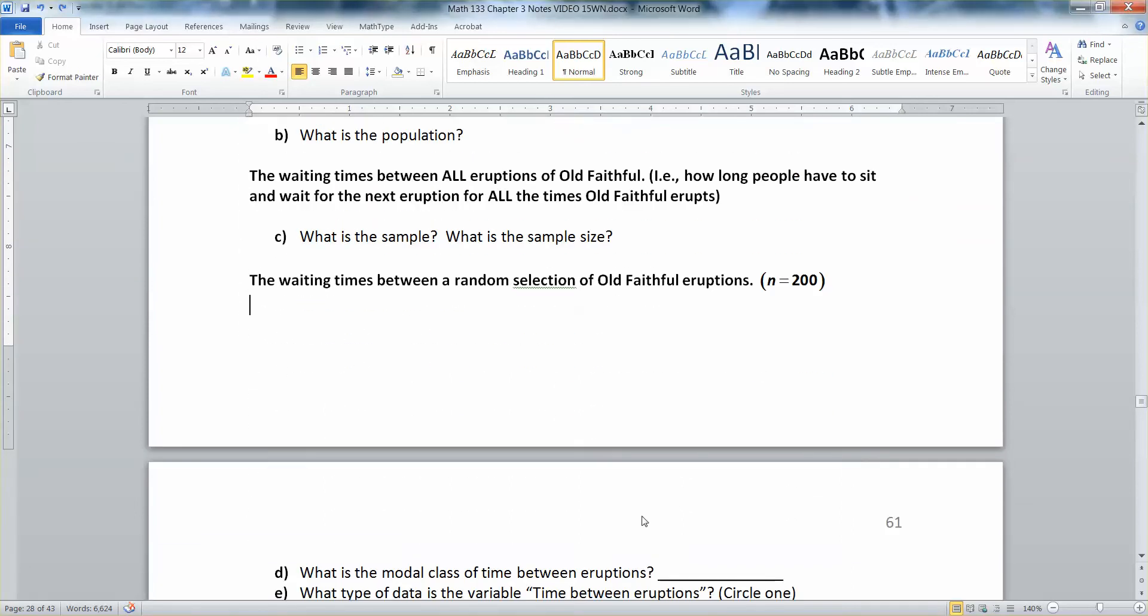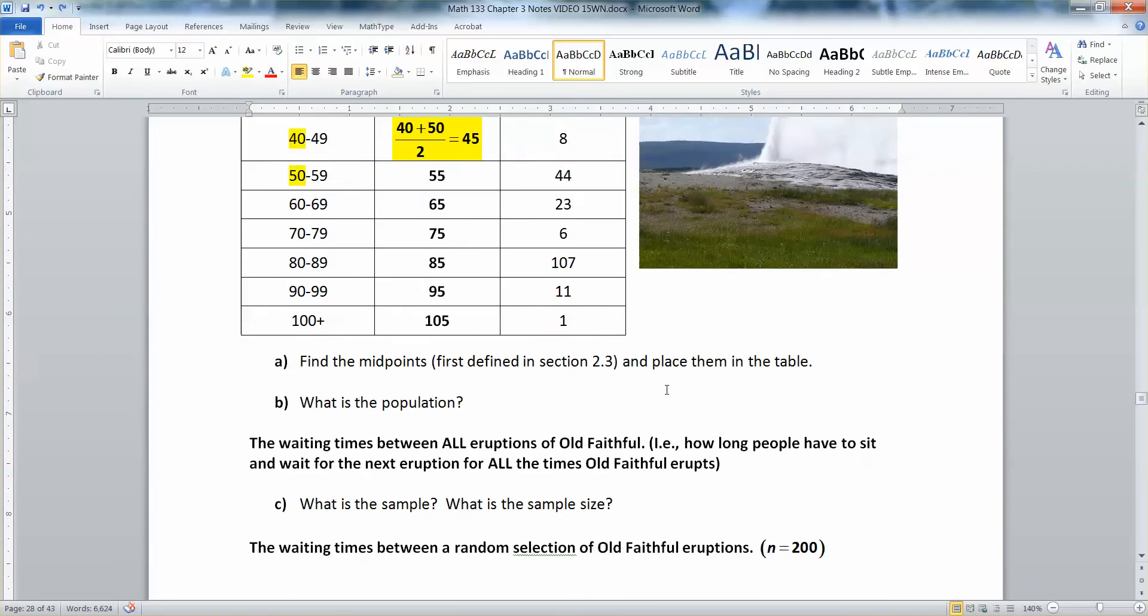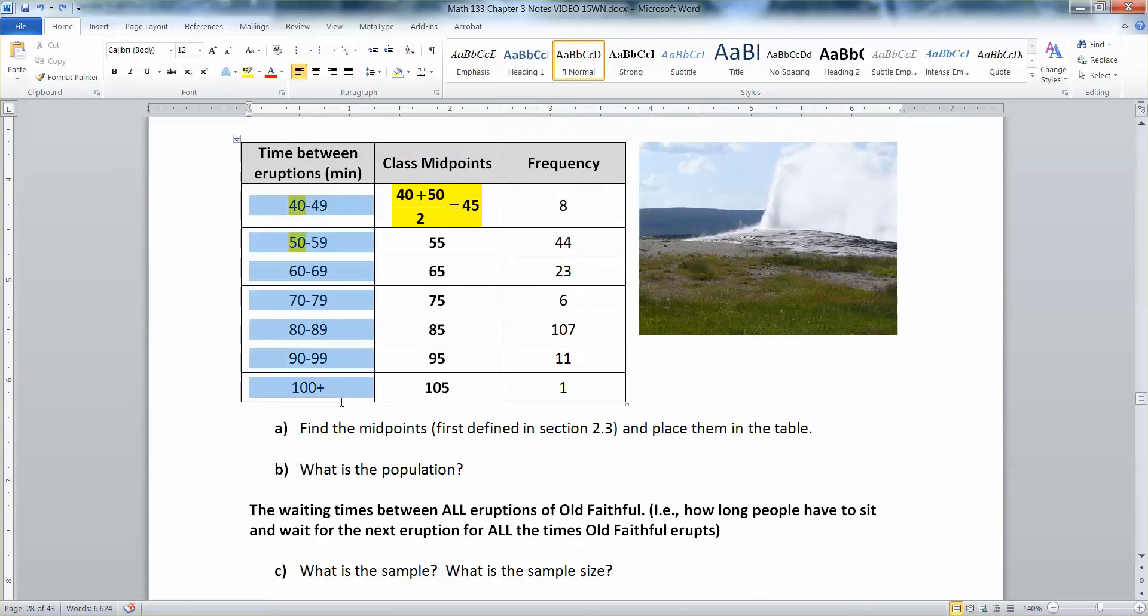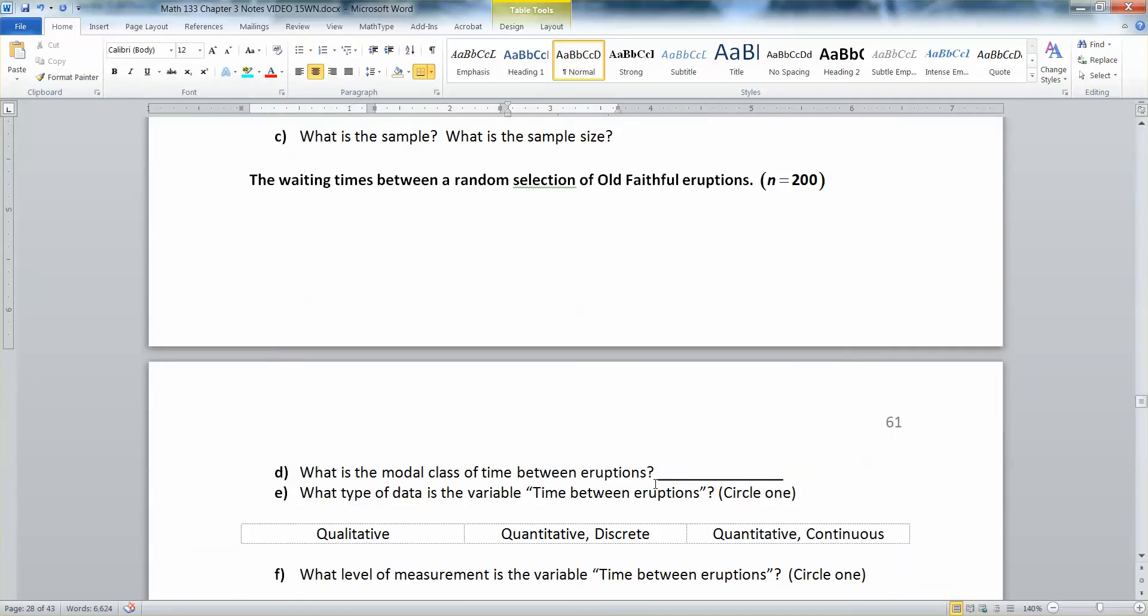What was the modal class between eruptions? Well, the modal class is the class that occurred the most often, the most frequency, which is rather obviously this class right here, 80 to 89, because it has the highest frequency of 107. So 80 to 89 minutes is our modal class.